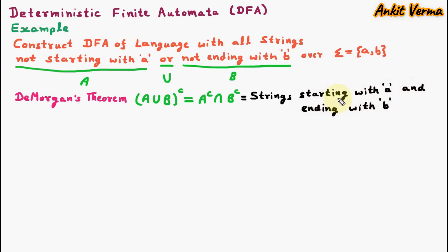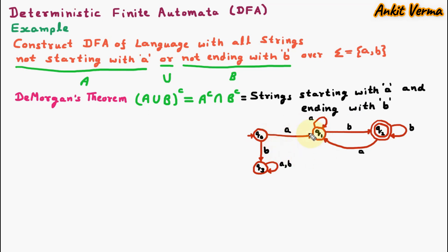This DFA — for strings starting with A and ending with B — we have already constructed in the previous lectures. So this is the DFA for strings starting with A and ending with B, or we can say it is A complement intersection B complement, which is also A union B complement.